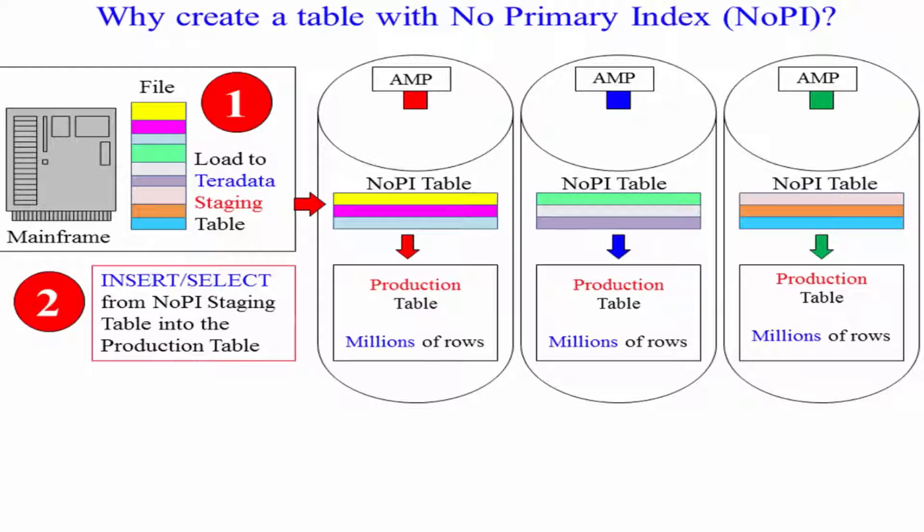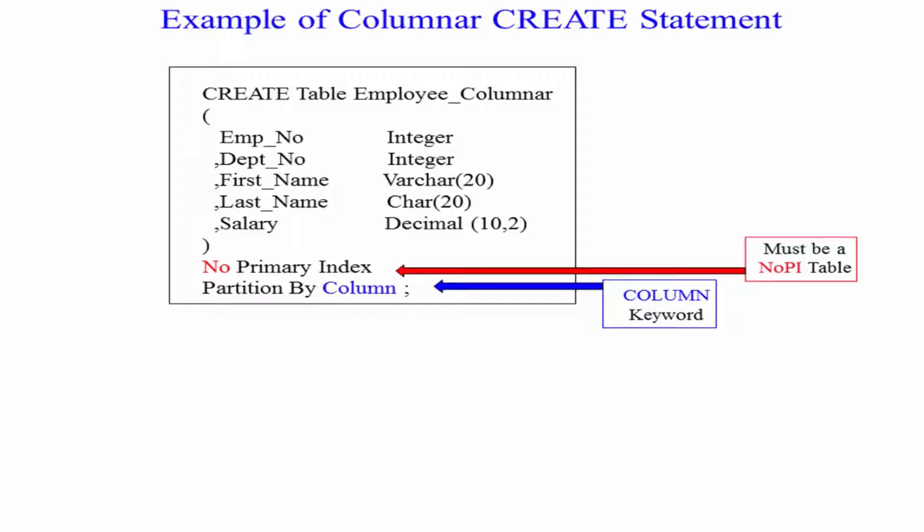So the no PI table is usually used for staging, where they go, we're going to load from the mainframe to the no PI table, data's spread evenly, load goes really fast, and then we'll do insert selection to the real table. Or Teradata is also using the no PI in their columnar design, which we'll see in a later video.